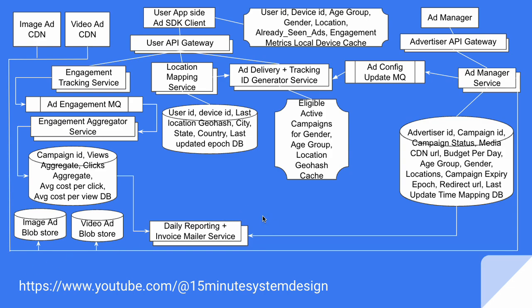The daily reporting and invoice mailer service uses the ad engagement DB and ad manager DB to generate a campaign-level report, containing campaign ID, total views, total clicks, total ad spend, average cost per view, average cost per click, etc. It sends the daily report to the appropriate advertiser along with an invoice for the total amount due so far, which needs to be paid during the next payment cycle.